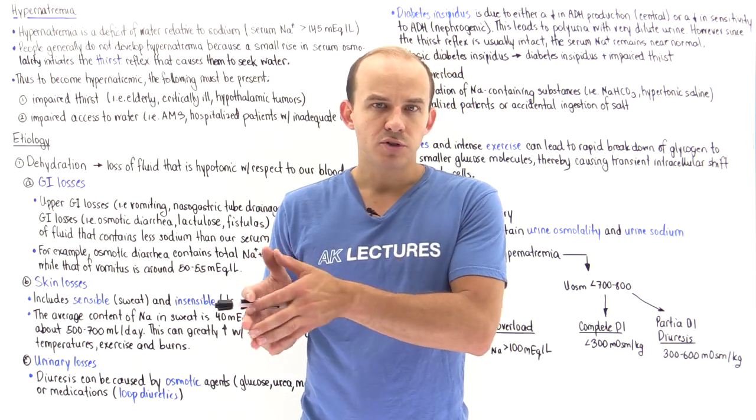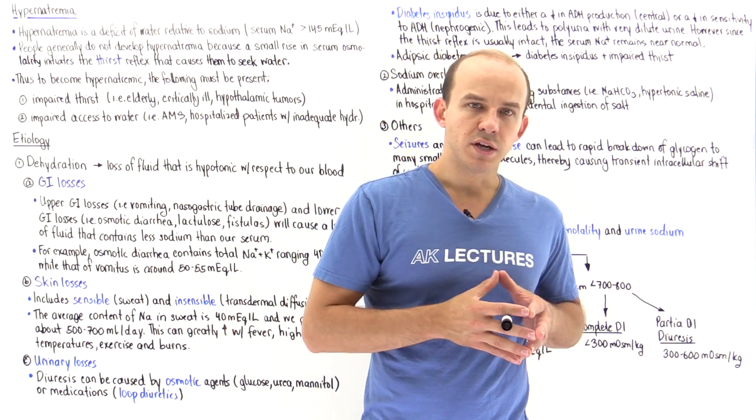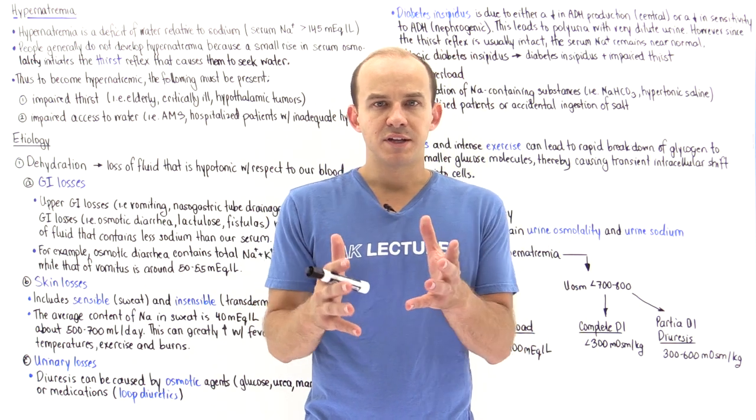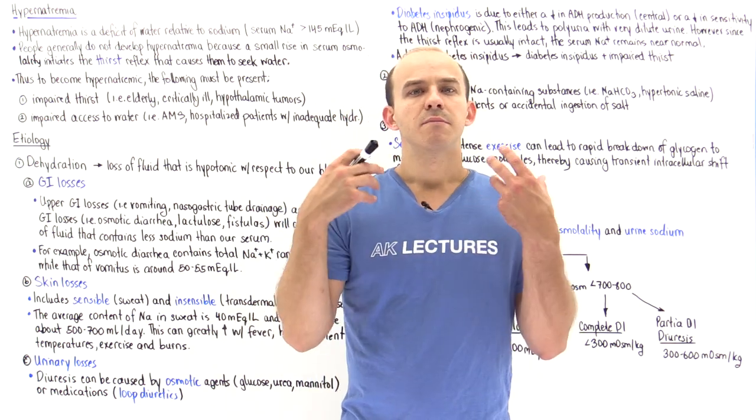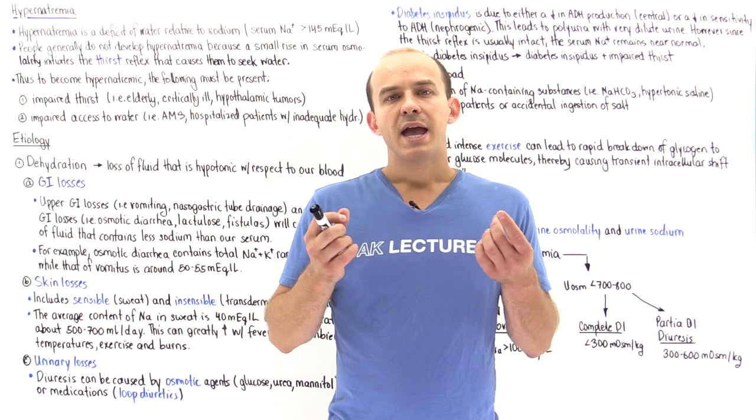Hyper means too much, and natremic means sodium. So if the sodium level is above 145 milliequivalents per liter, that is said to be hypernatremic.